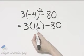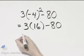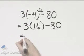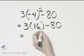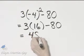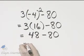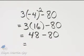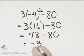Then we have multiplication versus subtraction. Multiplication is before subtraction in order of operations. 3 times 16 is 48, and then I have minus 80. And 48 minus 80, that's negative 32.